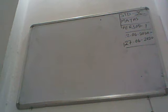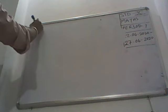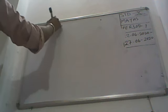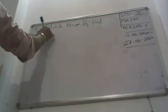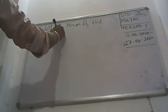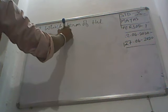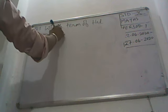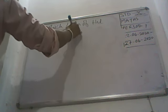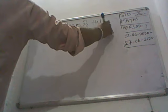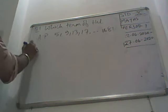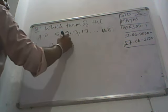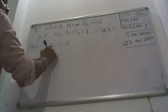If question is saying that which term of the AP, 5, 9, 13, 17 is 81. We are not knowing which term is 81, but we are knowing that there A is equal to 5, common difference is equal to 4.